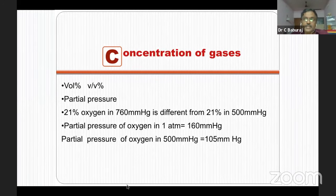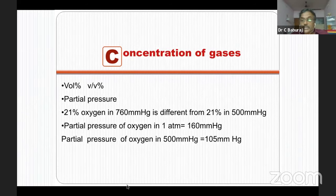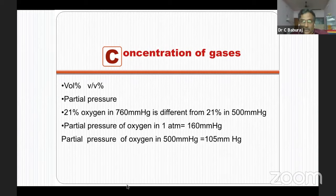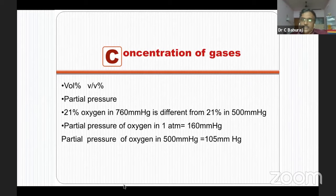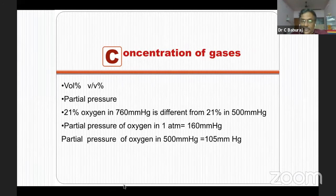The same 21 percent oxygen at high altitude where pressure is 500 mmHg gives a partial pressure of only 105 mmHg. That means when the ambient pressure comes down, even though the concentration is the same, the partial pressure is lower. That is the cause of hypoxia at high altitude even though the concentration of oxygen is 20 percent there. So there is a difference between volume percentage and partial pressure — the more absolute value is partial pressure, and clinically the significant one is partial pressure.